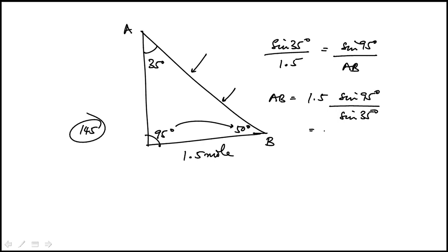We're just going to compute that using the calculator and make sure everything is in degrees. Sine 95 is almost 0.996 divided by sine 35 times 1.5. That's 2.6. They're asking for nearest tenth, so that's answer choice D.